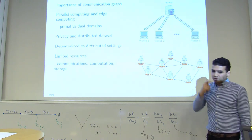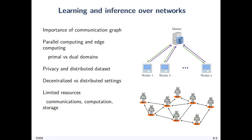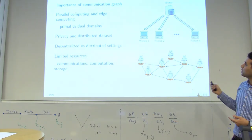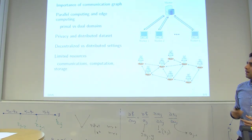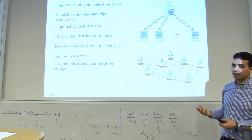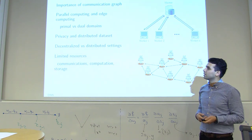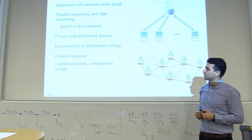In lectures five through seven, we covered learning and inference over networks. We saw the importance of the communication graph — whether you use a master-worker strategy or a full network architecture — and the importance of parallel computing. Computations can be done in the primal or dual domain, each with different interpretations in different applications.